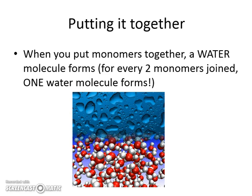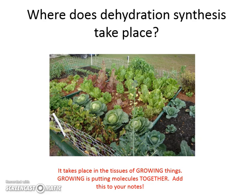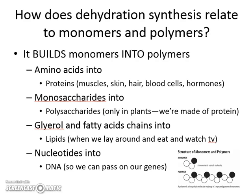Whenever you put monomers together, a water molecule forms. This is because you will form a water molecule using the process of dehydration. Water molecules are formed of H2O — two hydrogens to every one oxygen. So when you pull out two hydrogens and one oxygen, you form them into an H2O molecule or water. To dehydrate means to remove water from some sort of substance. Dehydrating sticks the molecule together and builds bigger molecules — remove the water and make it bigger. Dehydration synthesis takes place whenever tissues of growing things are growing, and growing puts the molecules together. Dehydration also relates to energy because it requires bonds to build; using energy builds the bonds.